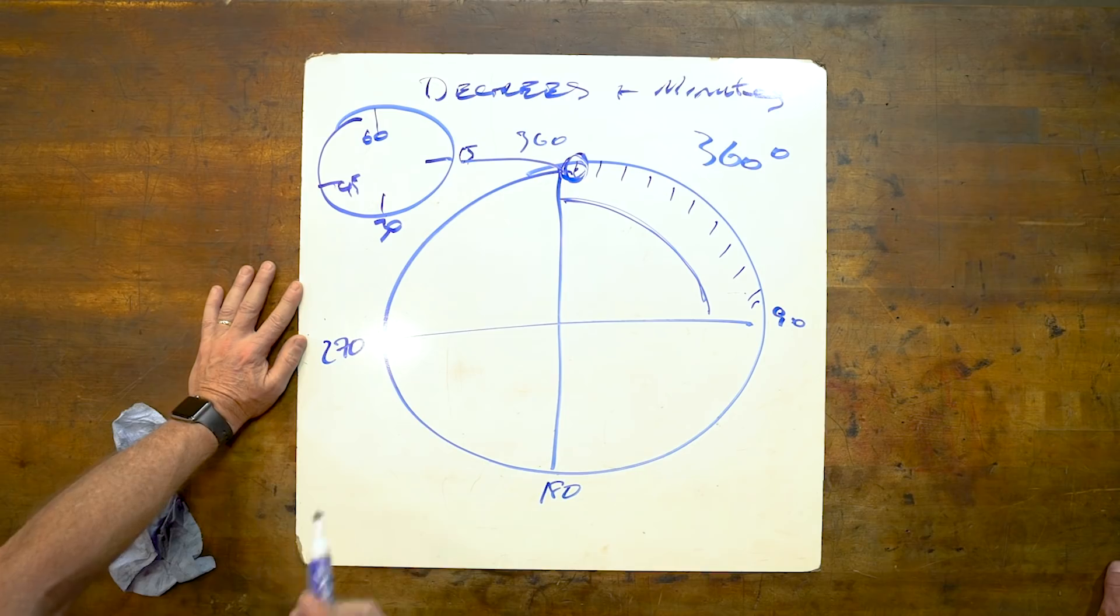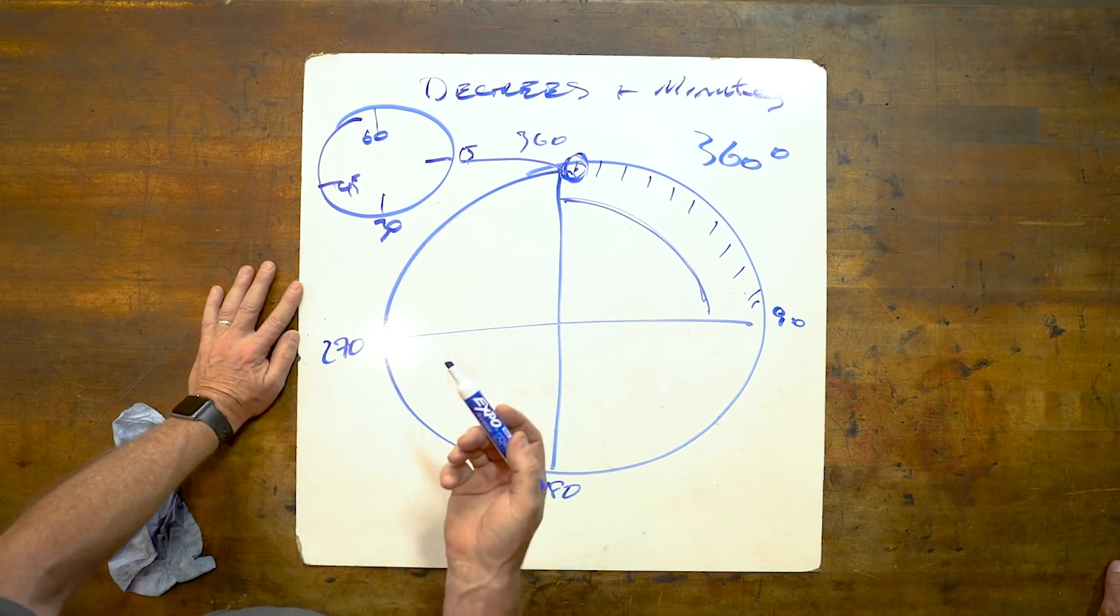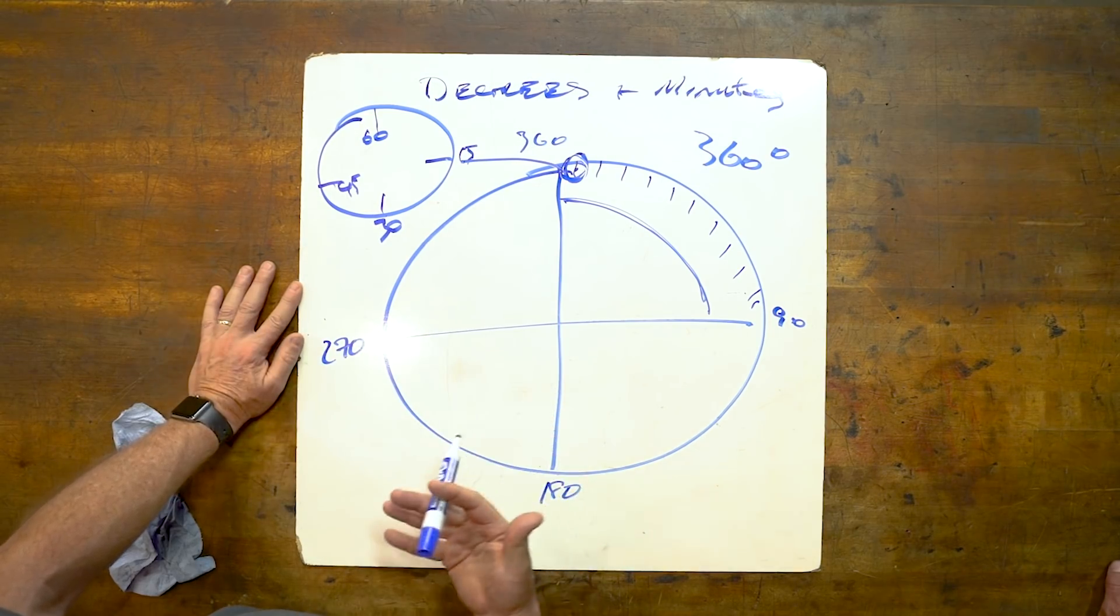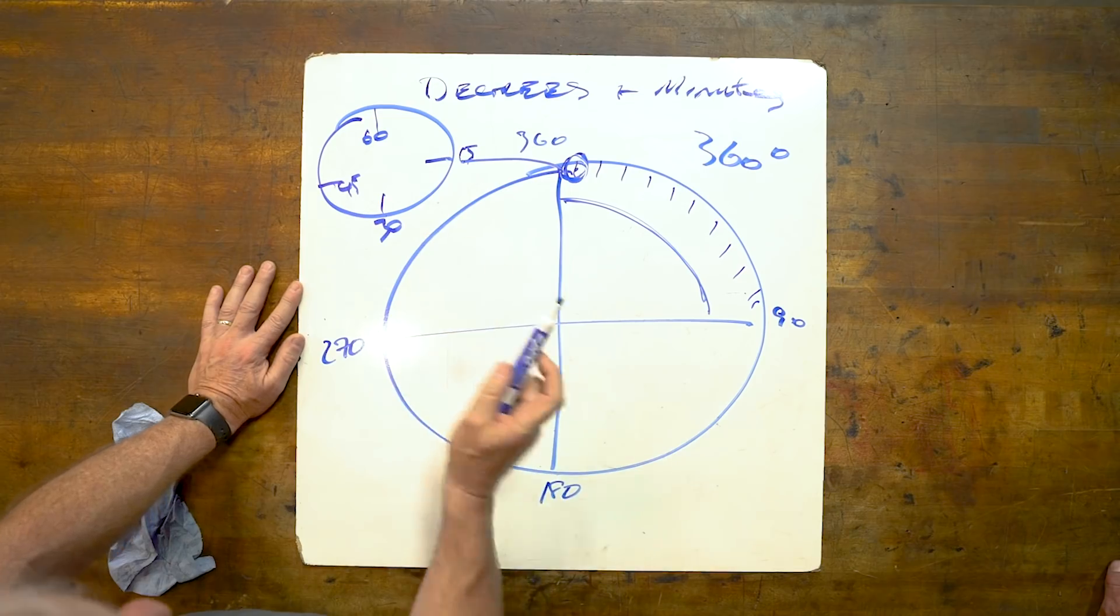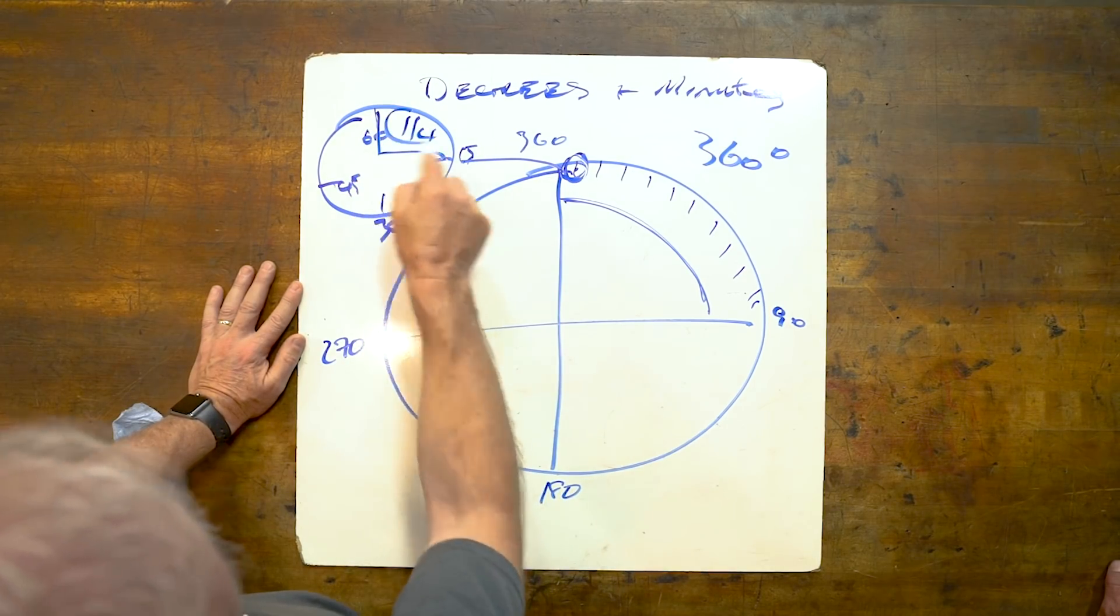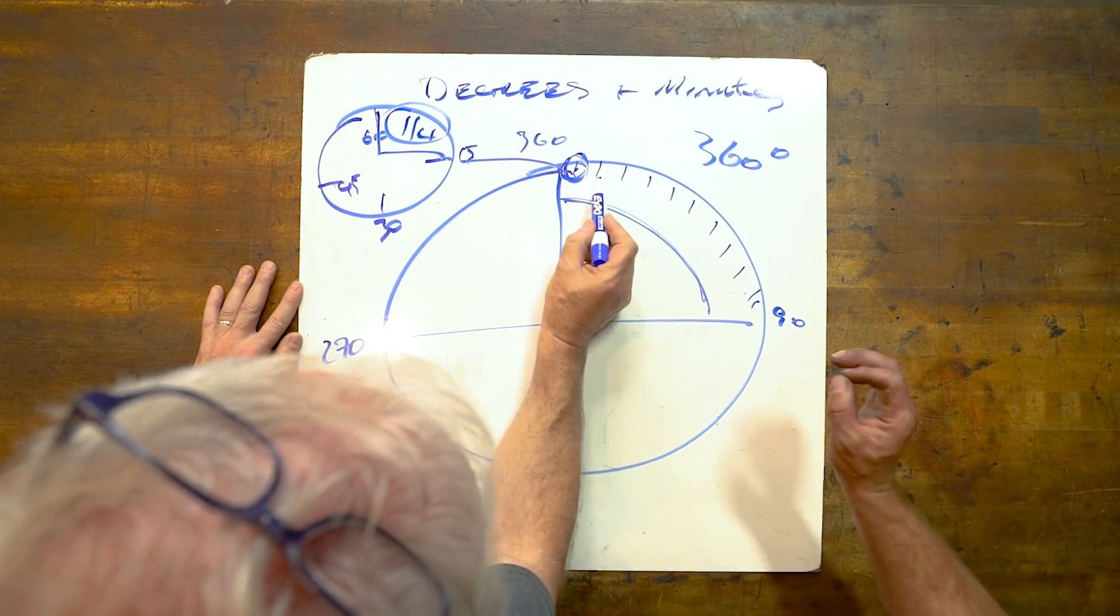So when someone says my vehicle is 15 minutes, that's why the machine talks in minutes. What does it mean by a minute? A minute, 15 minutes, is one quarter of one degree. One quarter of a degree, which is really thick.